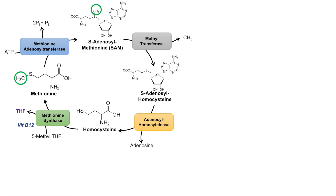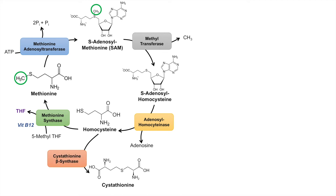If our purpose is not simply to generate S-adenosylmethionine or tetrahydrofolate but to actually generate energy, homocysteine can be redirected out of the activated methyl cycle and acted on by the enzyme cystathionine beta synthase to form cystathionine. Cystathionine beta synthase requires serine — it takes the carbon backbone of serine and adds it to homocysteine to form cystathionine, generating water in the process. Cystathionine beta synthase requires vitamin B6.